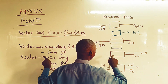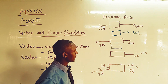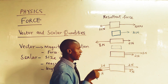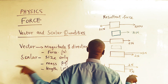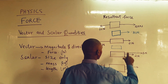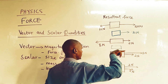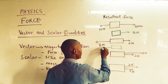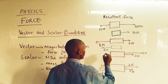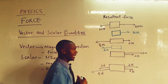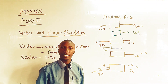In the second example, we have 8 newtons to the left and 2 newtons to the right. Since they are moving in opposite directions, we subtract: 8 minus 2 gives us 6 newtons moving to the left.